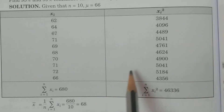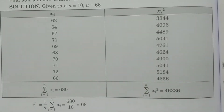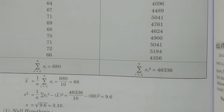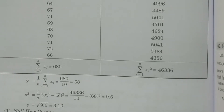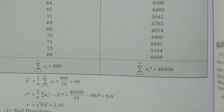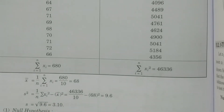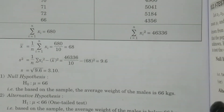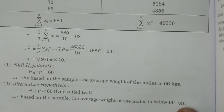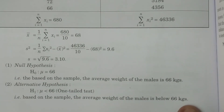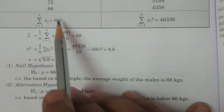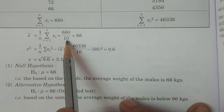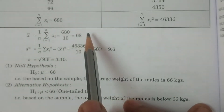These two values are calculated from the table. Then we calculate the mean and standard deviation. Sample mean x̄ = (1/n) × summation xi = 680 / 10 = 68. Note that sigma is not given, so we calculate sample standard deviation s, not sigma.